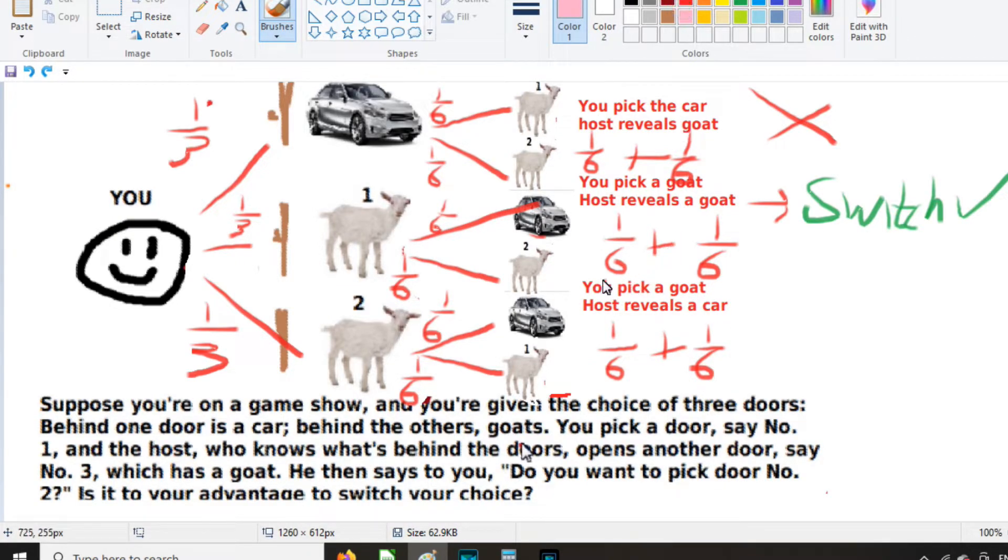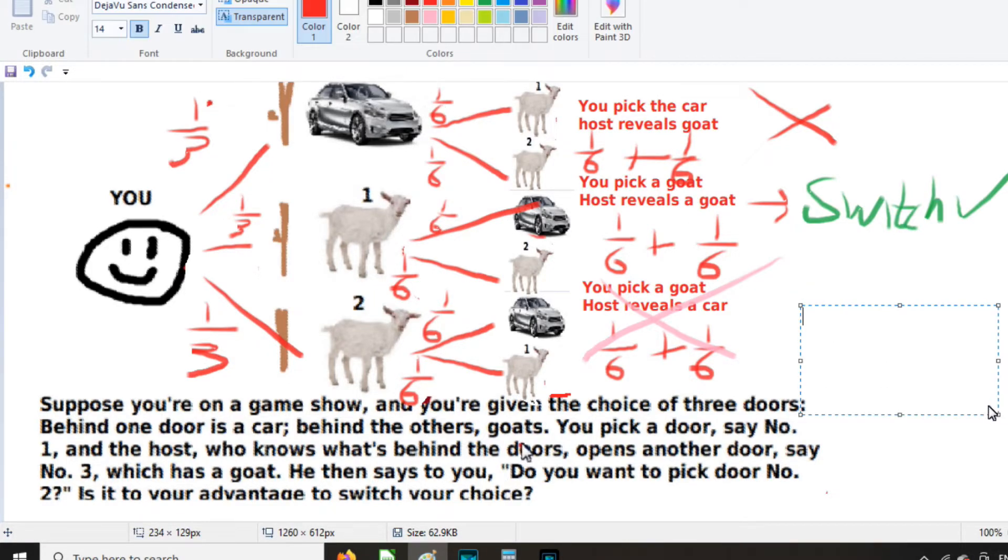We can ignore this extra third here because that's not relevant in this problem. So the Monty Hall problem is wrong. It's clearly 50-50. You have just as good odds of winning as losing by switching, because the problem is leaving out a key assumption.